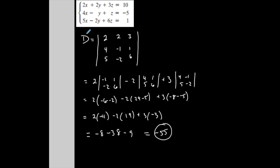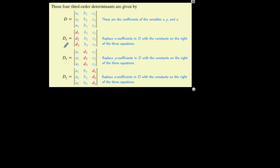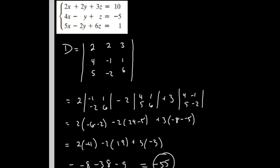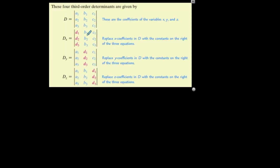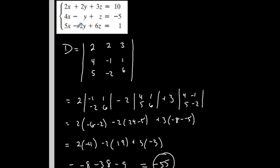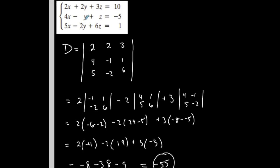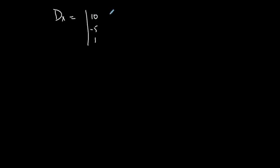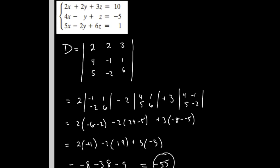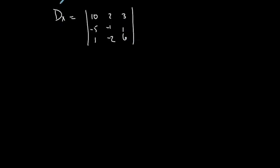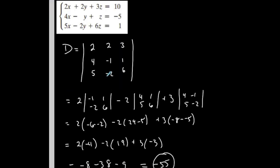That's just capital D, and I'm not done. Now you're going to see we also need Dx, Dy, and Dz. Dx is the determinant of the coefficient matrix, but with one change: instead of the x coefficients, I replace that column with the constant column — so 10, negative 5, 1. The rest of the matrix stays the same: y column 2, negative 1, negative 2, and z column 3, 1, 6.